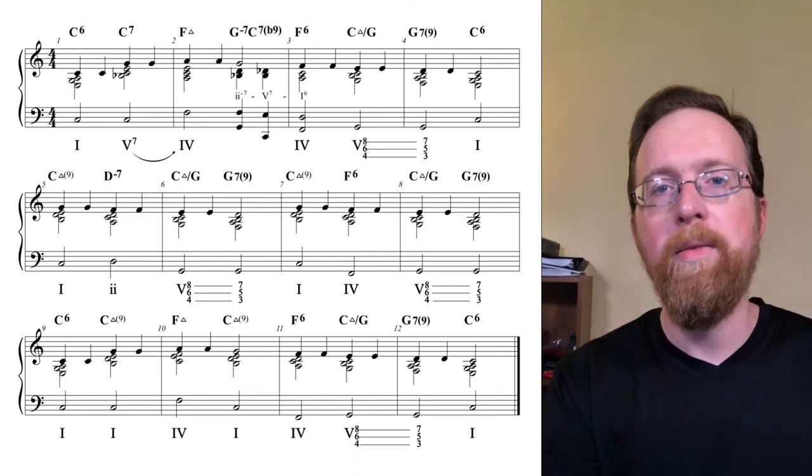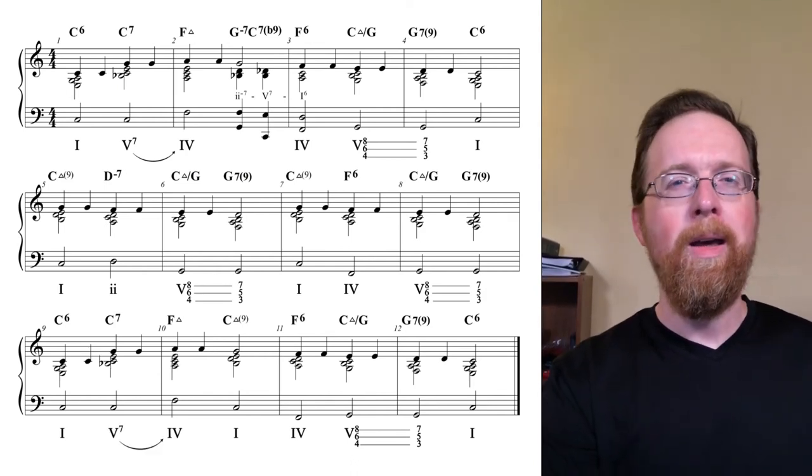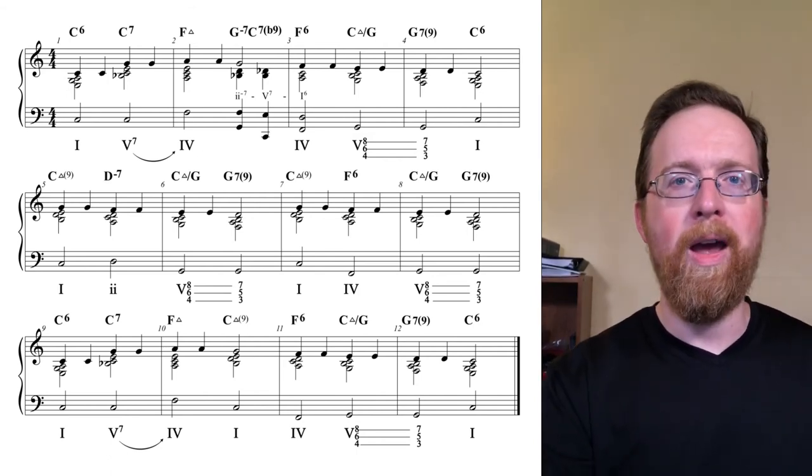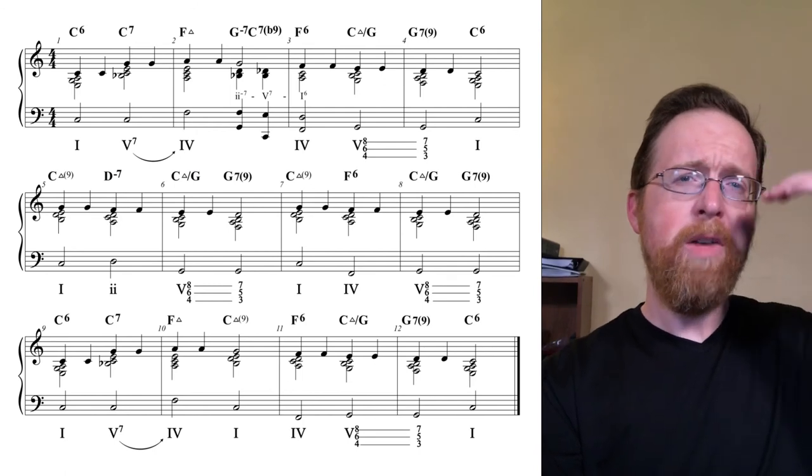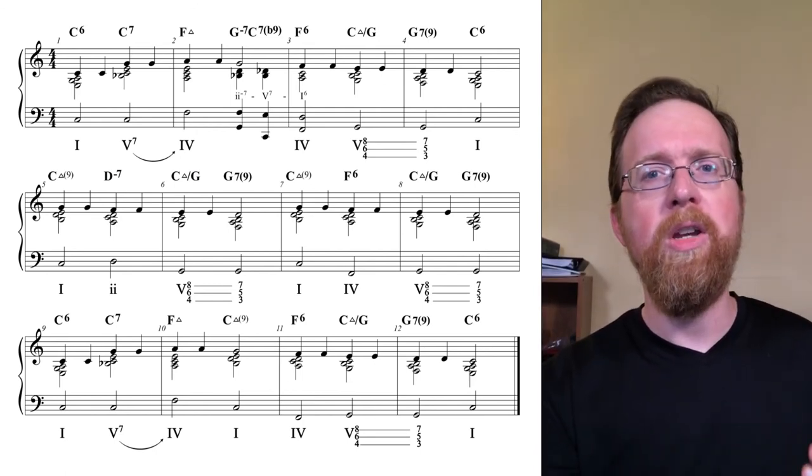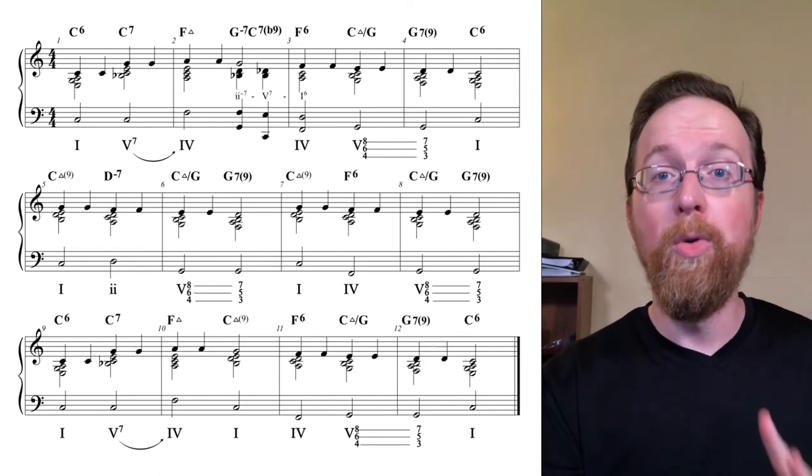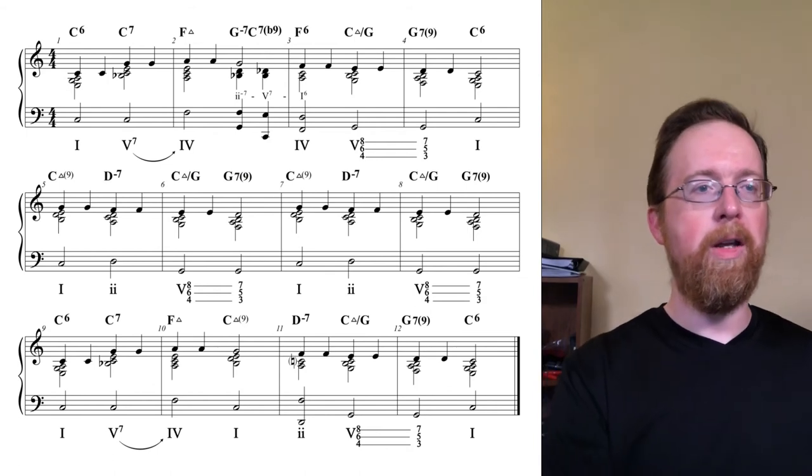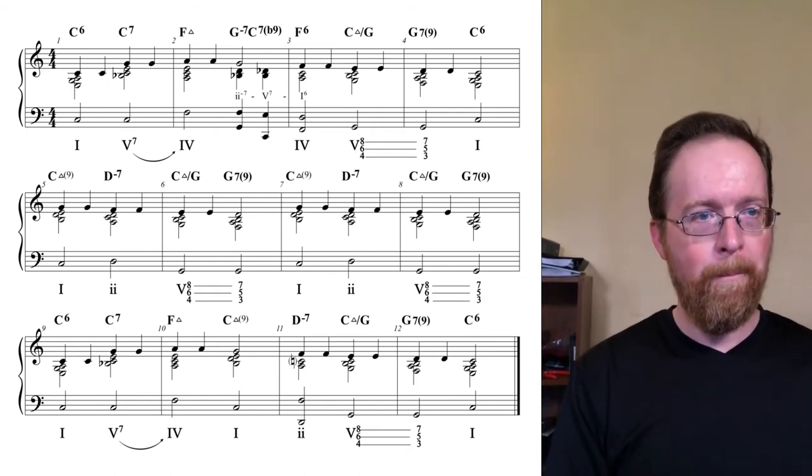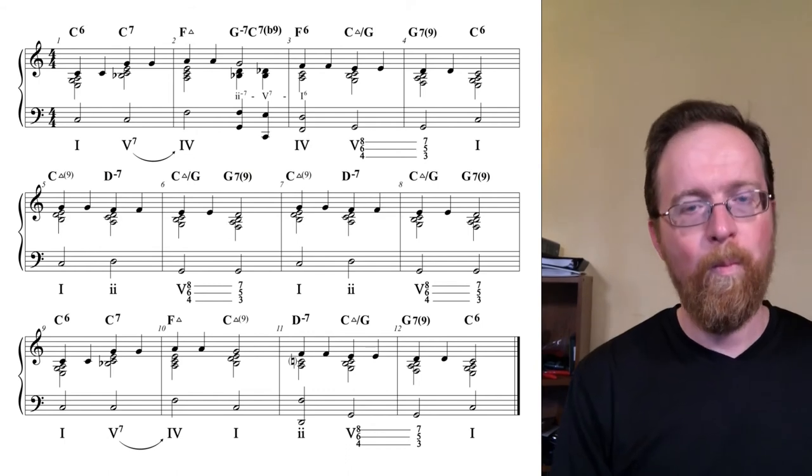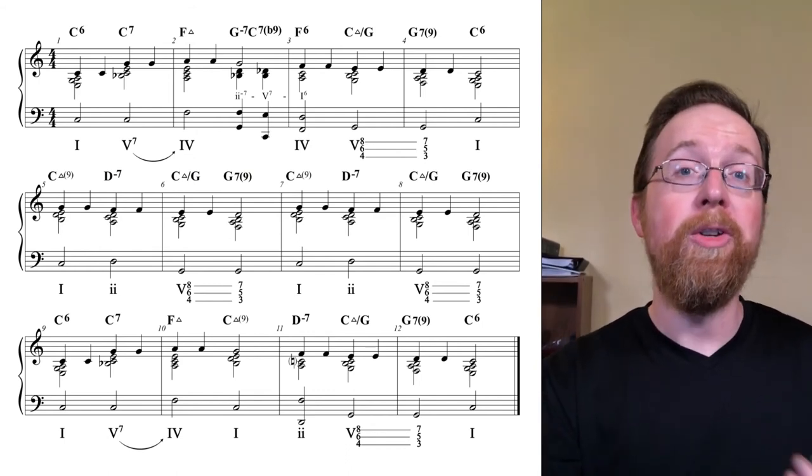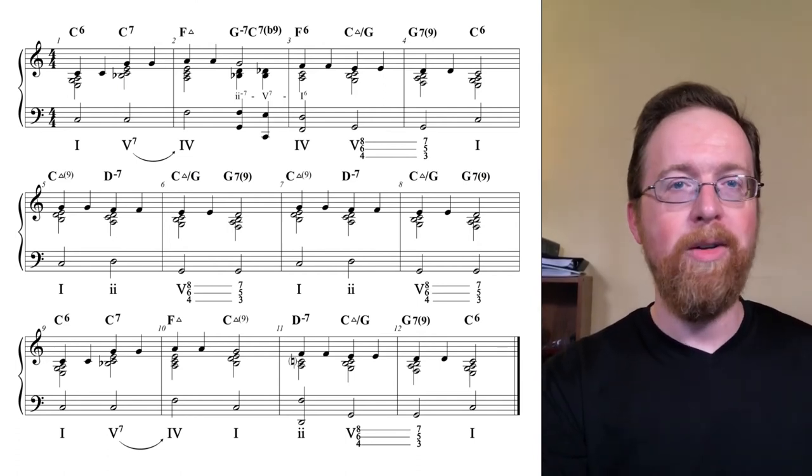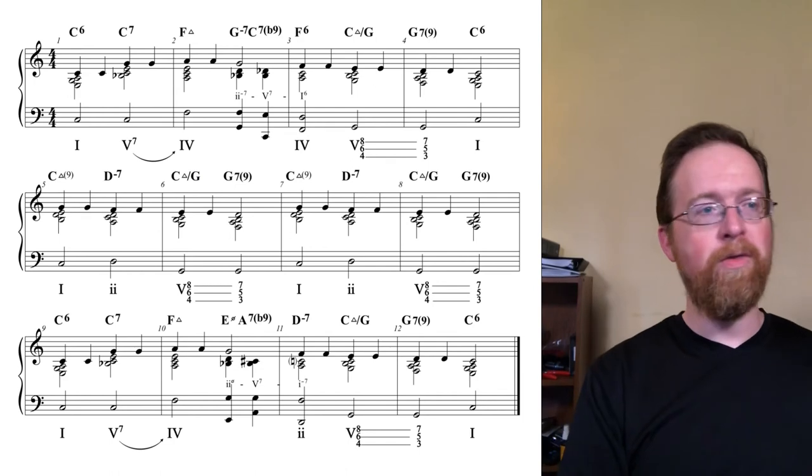In measures 10 to 11, I could just repeat what I did in measures two and three, but I want something fresher. I need a variation of whatever I did in the first half. So instead of a 2-5-1 in F, I'm going to replace the four chord in measure 11 with a two chord. So a D minor chord. I'll create a 2-5-1 progression at the very end. Then I'm going to insert a 2-5-1 in the key of D minor to tonicize that new two chord.